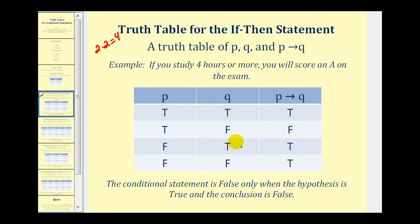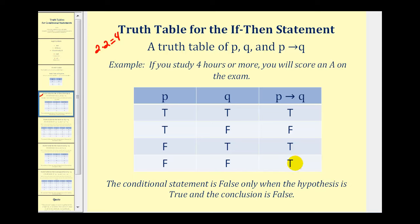When P is false and Q is true, that means you don't study four or more hours, and you still score an A on the exam. As soon as you know that you don't study four or more hours, this is not going to be in violation of the agreement the instructor made, and therefore it's true. The same applies when P is false and Q is false — you don't study four or more hours and you don't score an A, but the instructor only made an agreement if you study four or more hours, so it's not a violation and therefore is true.